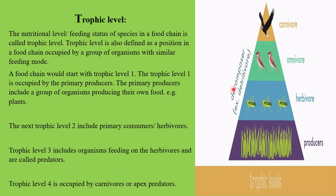The next trophic level includes herbivores and predator species, and the last trophic level is always occupied by the apex predators or carnivores — for example, the hawk. These are the different trophic levels. Trophic level is simply the feeding status of a species in a food chain. Trophic level one always starts with the base of the food chain — the producers — followed by herbivores at level two, and so on.